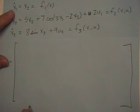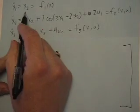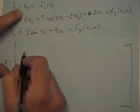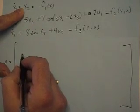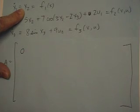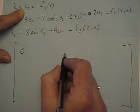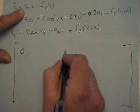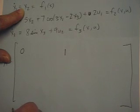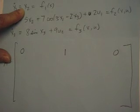Let's build A. For the first row, we take partials of f1. The first element is the partial of f1 with respect to x1 — f1 is just x2, so there's no x1, giving zero. The second element is the partial of f1 with respect to x2, which is one since f1 equals x2 only. The partial of x2 with respect to x3 is again zero since there's no x3 in that equation.